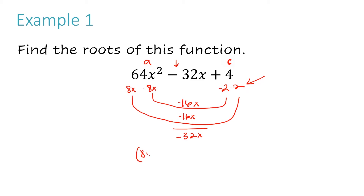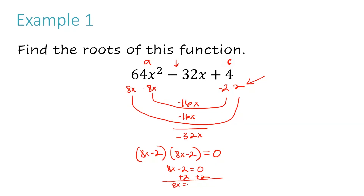So the binomials are (8x − 2) and (8x − 2). Now I set both equal to zero. Because they're the same, I only need to do this once: 8x − 2 = 0. Adding 2 to both sides gives 8x = 2, then dividing by 8 gives x = 1/4. Since both binomials are identical — because this is a perfect square trinomial — I don't need to solve the second one separately.